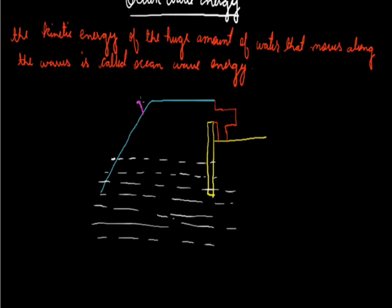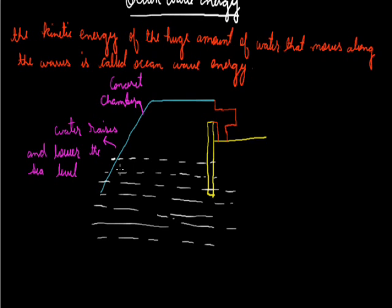This blue colored structure represents the concrete chamber. This white line represents the water rises. When the water rises, the level of the sea decreases. This arrow represents the pushing of air.